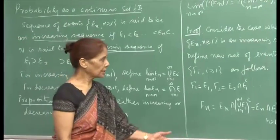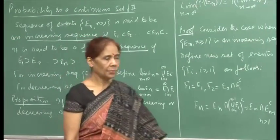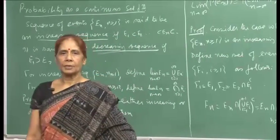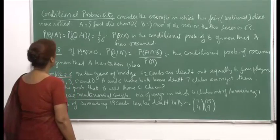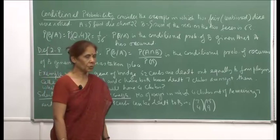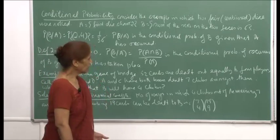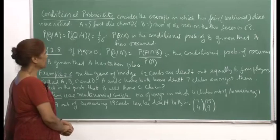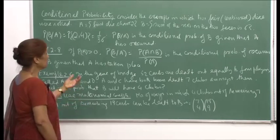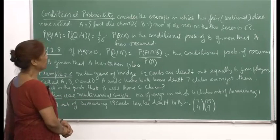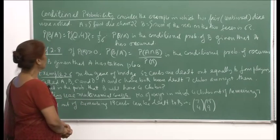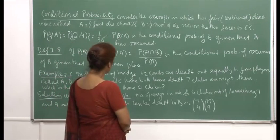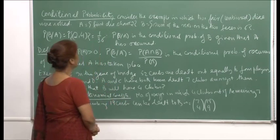Since P is a continuous set function, I will often be exchanging the process of taking the limit and the probability. Now I will define another new concept: conditional probability. Starting from the three axioms, I am able to develop more and more theory about probability.